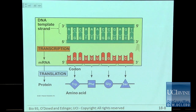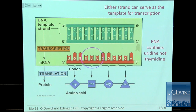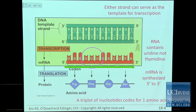This figure from your book shows what we're going to talk about today. A few key points: either strand of DNA can serve as a template for transcription. RNA contains uridine instead of thymine, so U base-pairs with A. RNA is synthesized 5 prime to 3 prime, just like DNA — easy to remember. And the last point: a triplet of nucleotides codes for one amino acid, so it takes 3 nucleotides to get one amino acid.